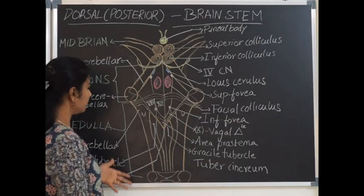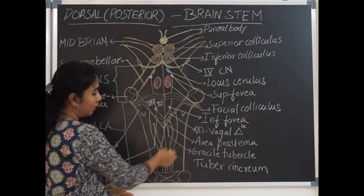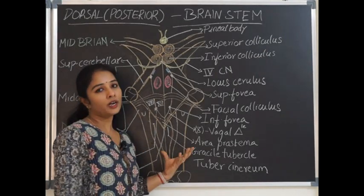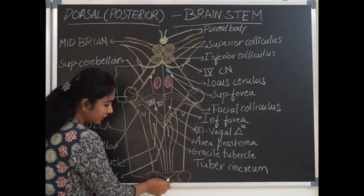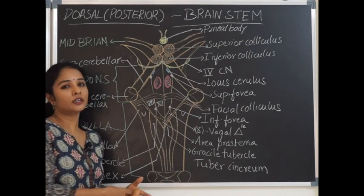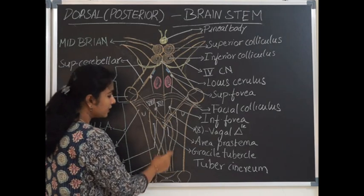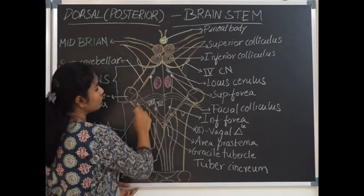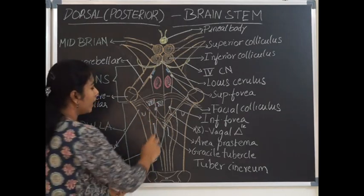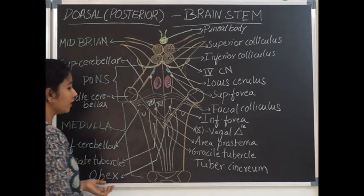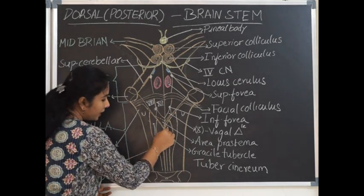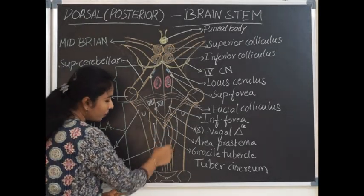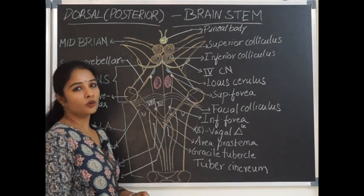The dorsal surface of the brainstem — the lower part is formed by the medulla oblongata, which is divided into two parts: an upper open part and a lower closed part. The central canal of the spinal cord continues as the central canal of the medulla oblongata. As it reaches the upper half of the medulla, the central canal opens up to form the floor of the 4th ventricle. The lower closed part has a posterior median sulcus which divides it posteriorly into two halves and continues as the posterior median sulcus of the spinal cord.